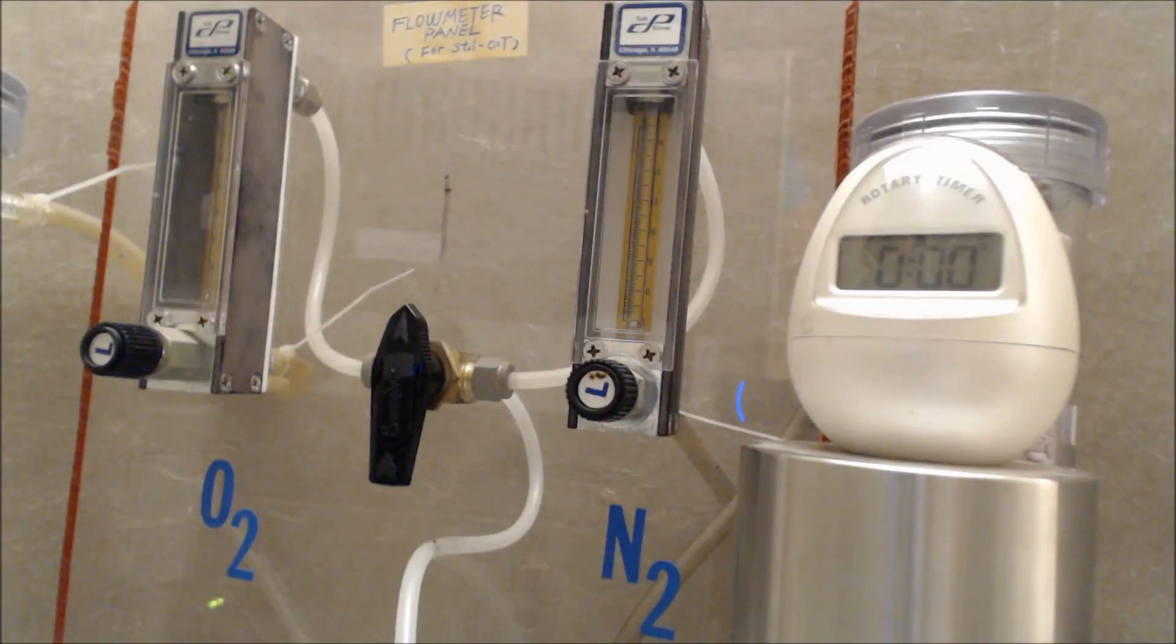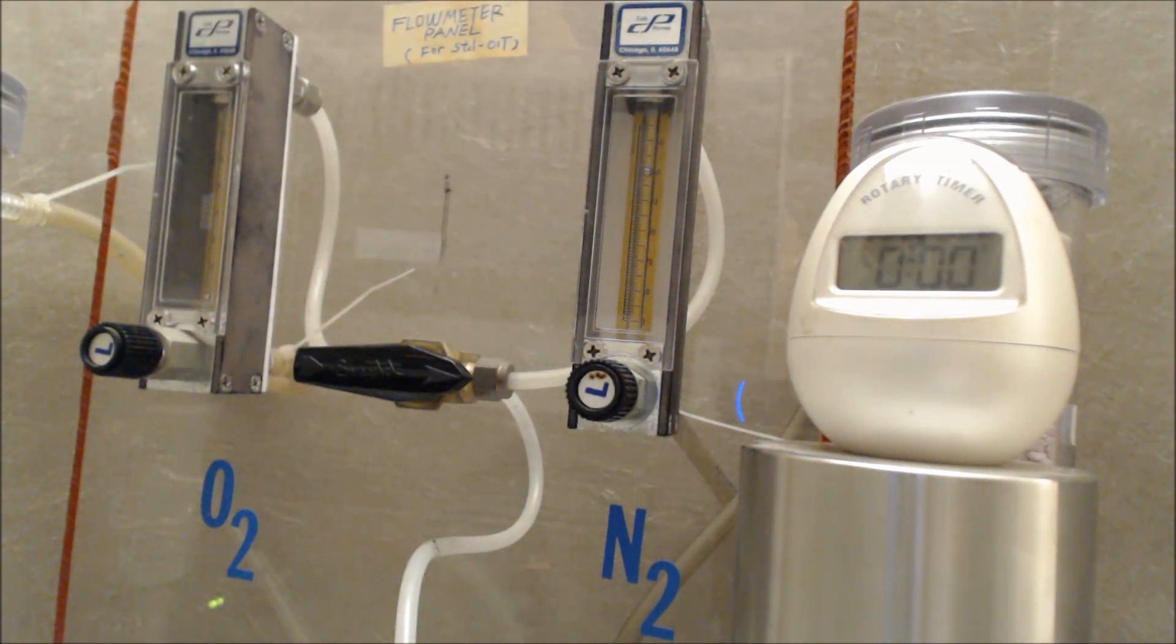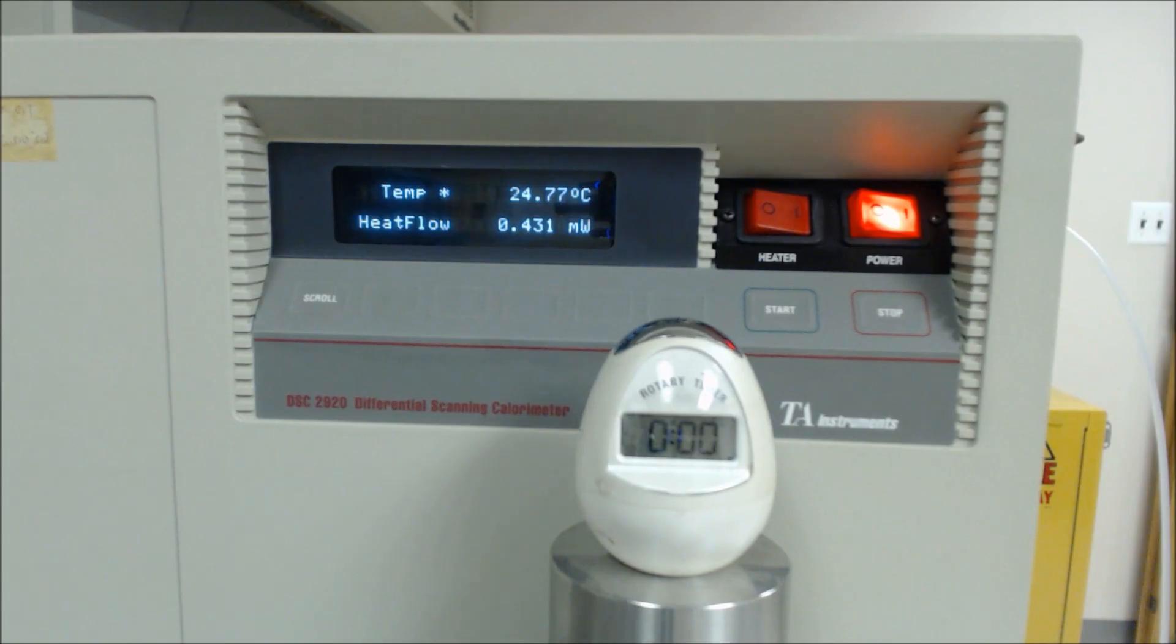At this point in our standard OIT test it's time to introduce gas into the cell. We will use this flow meter panel to introduce 5 psi or 34 kilopascals of nitrogen gas at a flow rate of 50 milliliters per minute. One important thing to note is that you must wait several minutes after turning on this nitrogen gas in order to let any oxygen be purged from the cell. After waiting several minutes, we're ready to start.